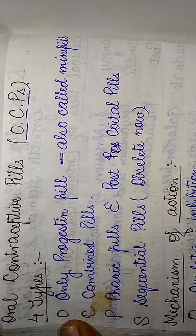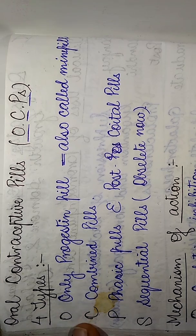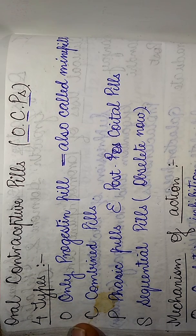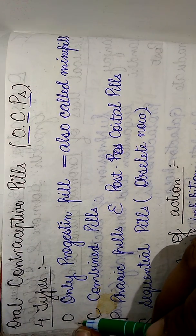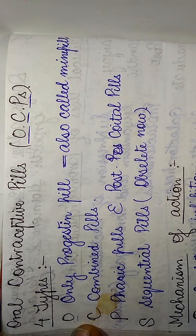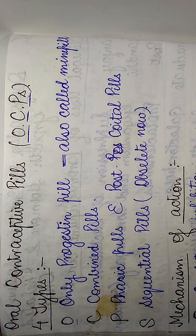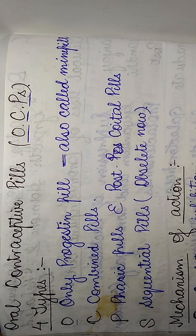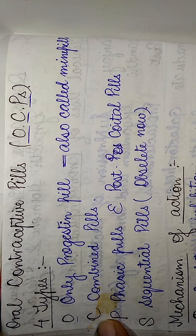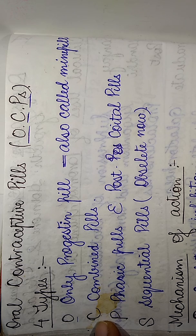The first class — there are four types. The first O of OCPs stands for the only progestin pills, which are very famously called the mini pills. The C stands for the combined pills, which contain both combinations, that is progesterone and estrogen.